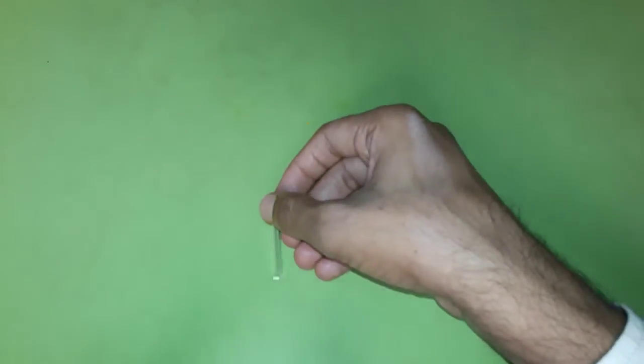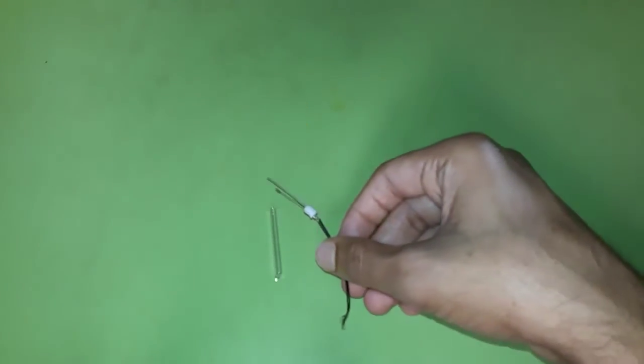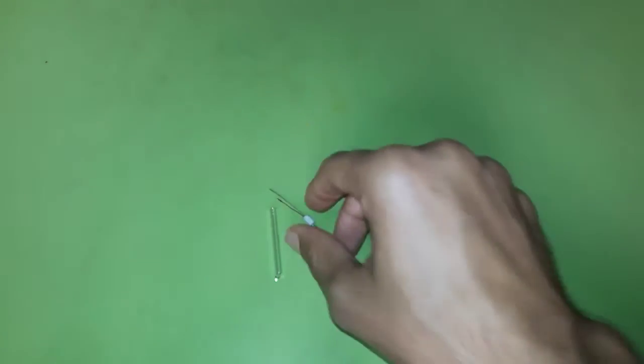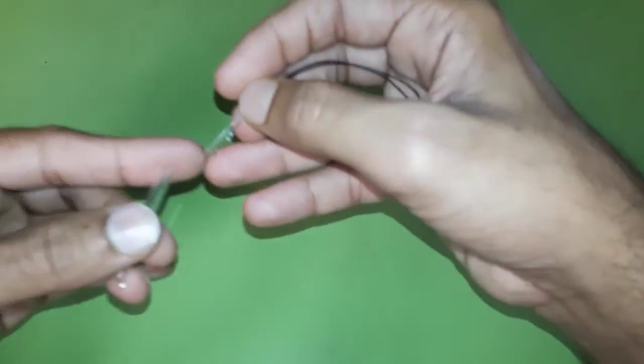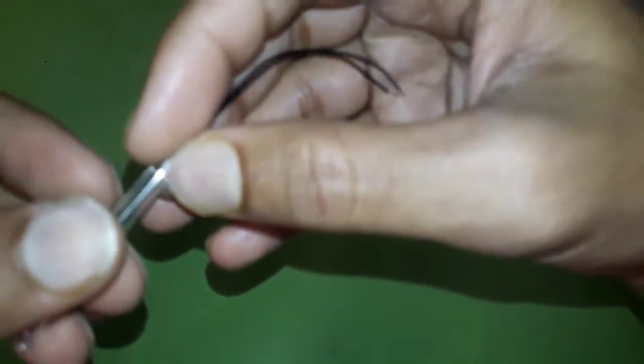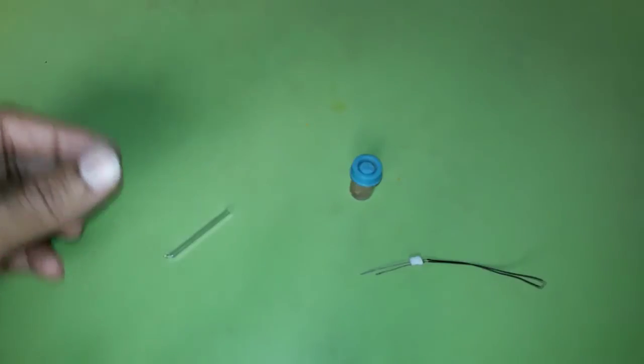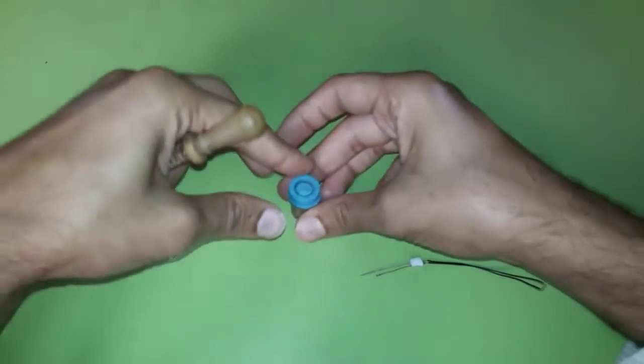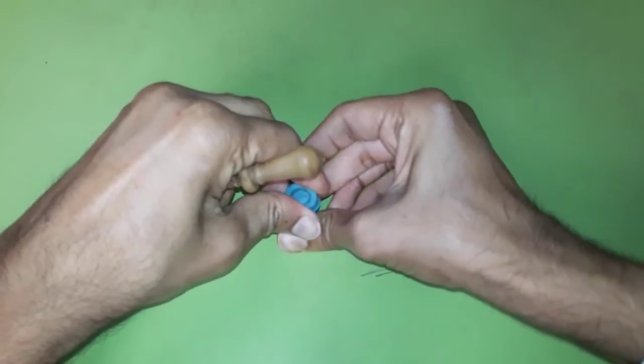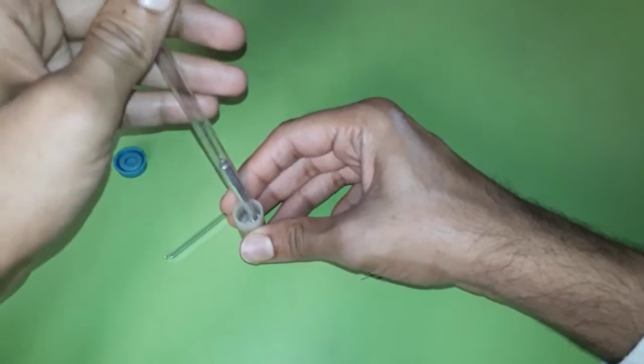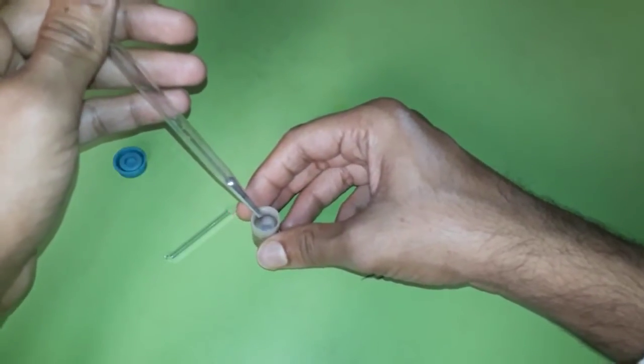The sensor we are going to make will work on the basis of a mercury thermometer. Here are the things required. First of all, we will fill this glass tube with mercury up to a certain level.